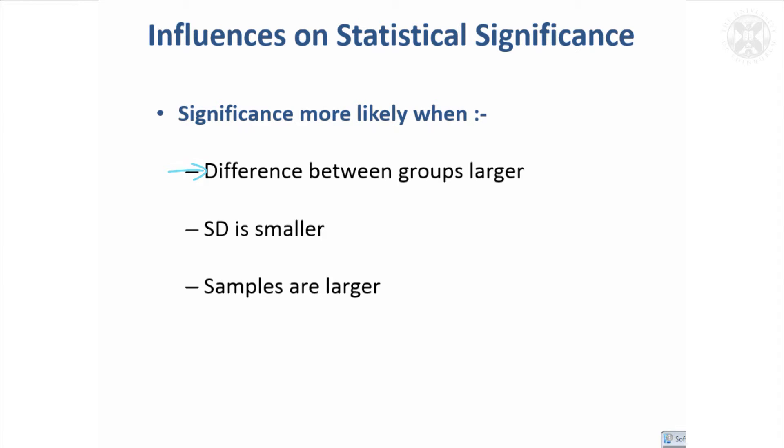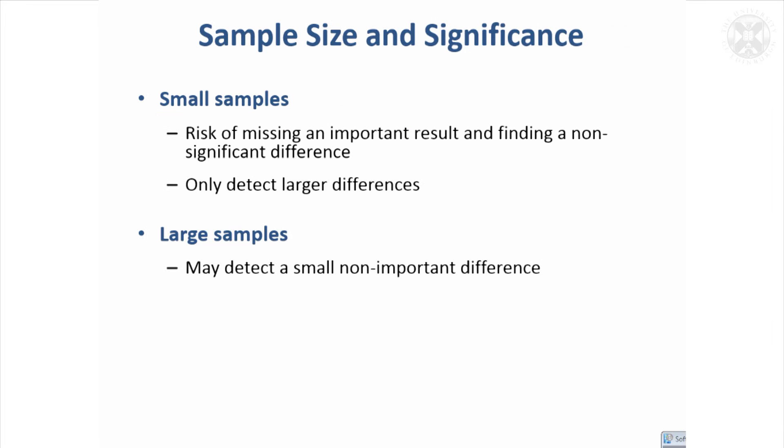If you've got a smaller variability in the data, then it's easier to show statistical significance. And even if you've got high variability, if you've got a really large sample, then you still might get statistical significance. So the bigger the sample, the more likely you are to detect a difference.